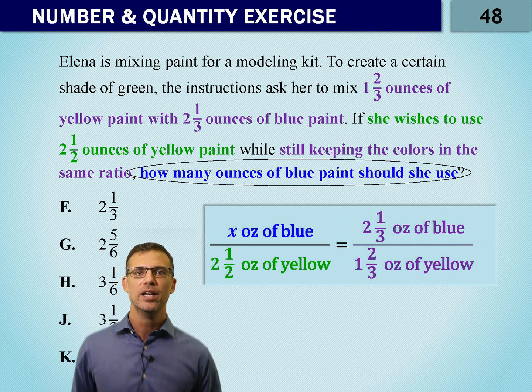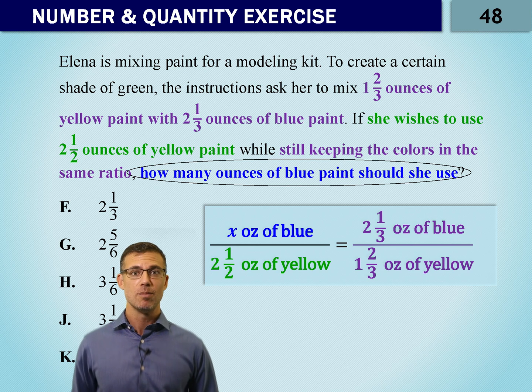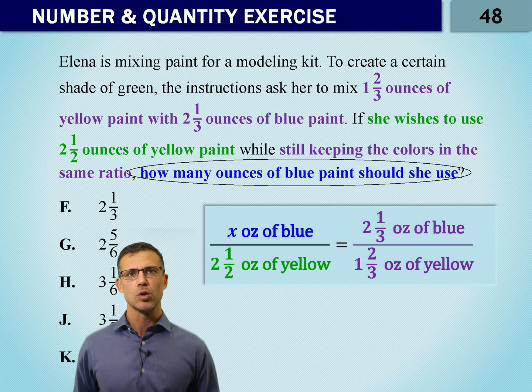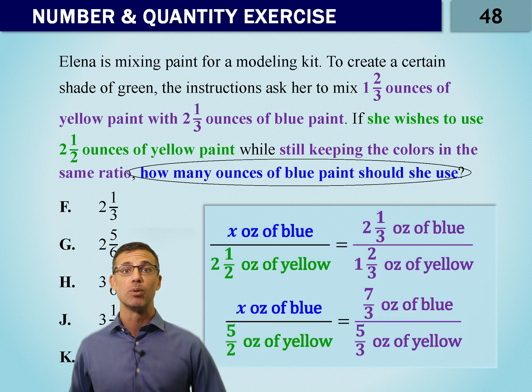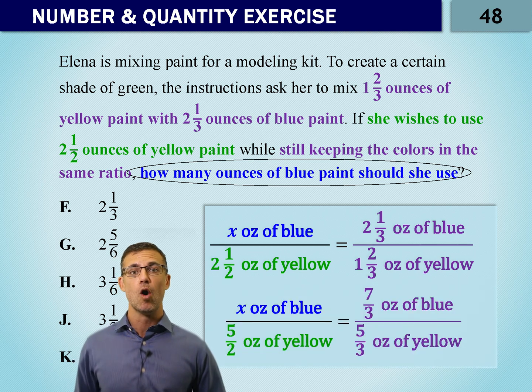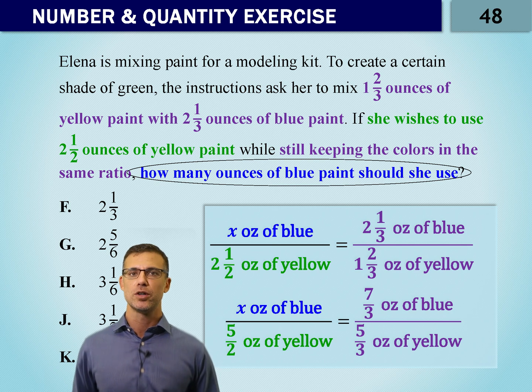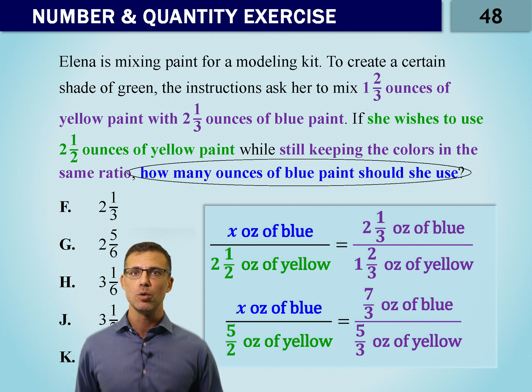And now we cross multiply. If you don't love fractions, remember you can put this into your calculator. Just be careful. If you'd like to be able to reduce this or simplify, we can turn them into improper fractions. Seven over three would be two and a third. Five over three would be one and two-thirds. And five over two would be two and a half.